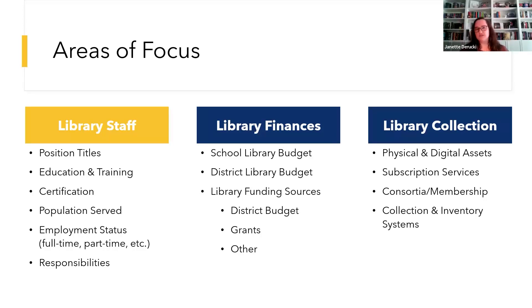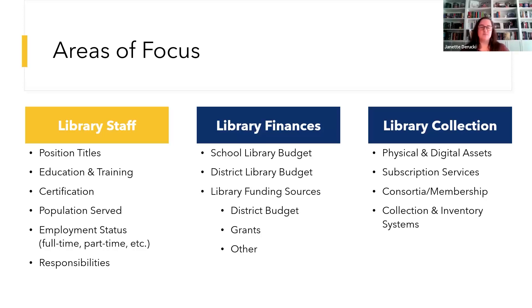We're also looking at populations being served, based on locale — whether urban, rural, regions, county, grade level, age, or other demographics. We're also comparing staffing by building and district size. Employment status is an important metric because it specifically looks at how libraries are staffed. Many librarians are covering multiple buildings or serving in additional roles within the school, and our data reflects that. That leads me to the last point, which is responsibilities — we're trying to understand to what extent librarians have responsibilities outside of the library.